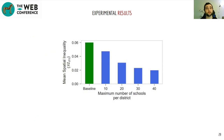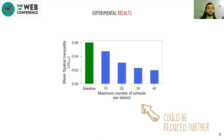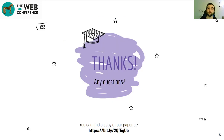Finally, we tested what would happen if we allowed our algorithm to merge districts, limiting only the maximum number of schools allowed per district. We recognize this may create administrative challenges if districts are merged, but it is important to note that the spatial inequality index could potentially be reduced even further. For a more detailed discussion, please read our paper. Thank you very much for listening.